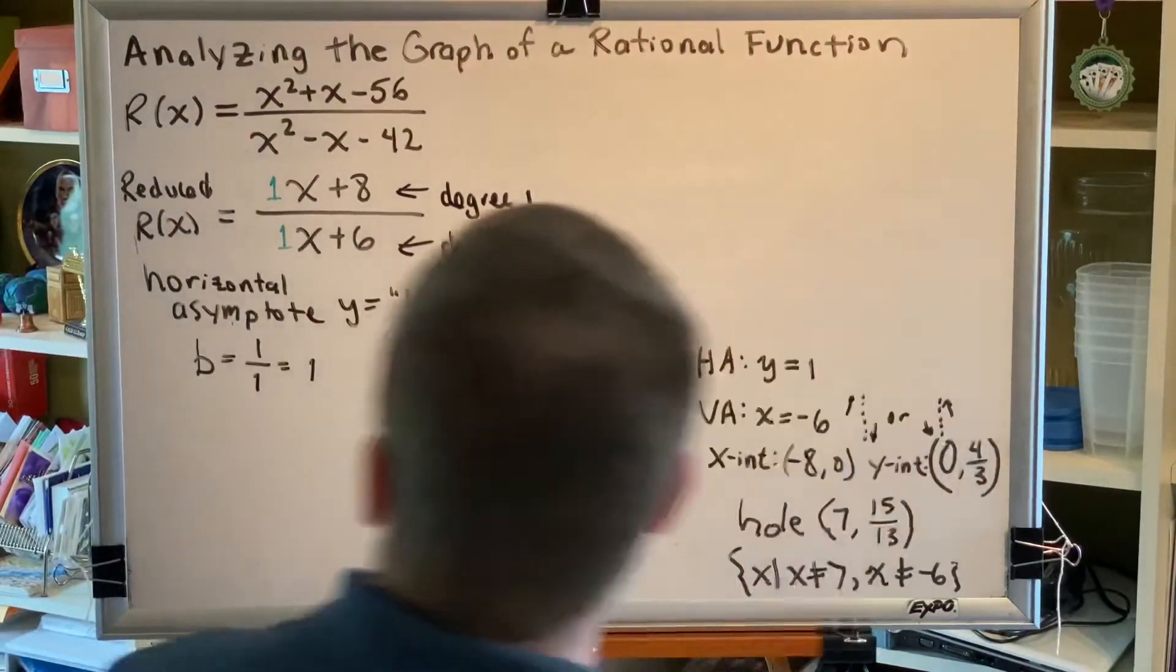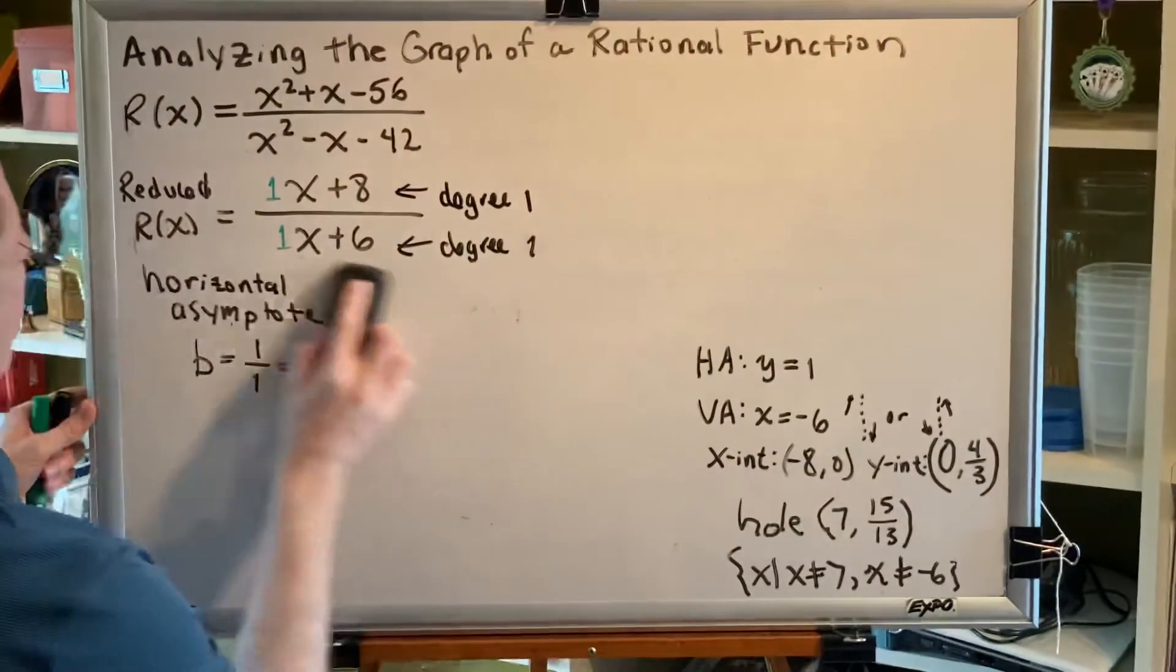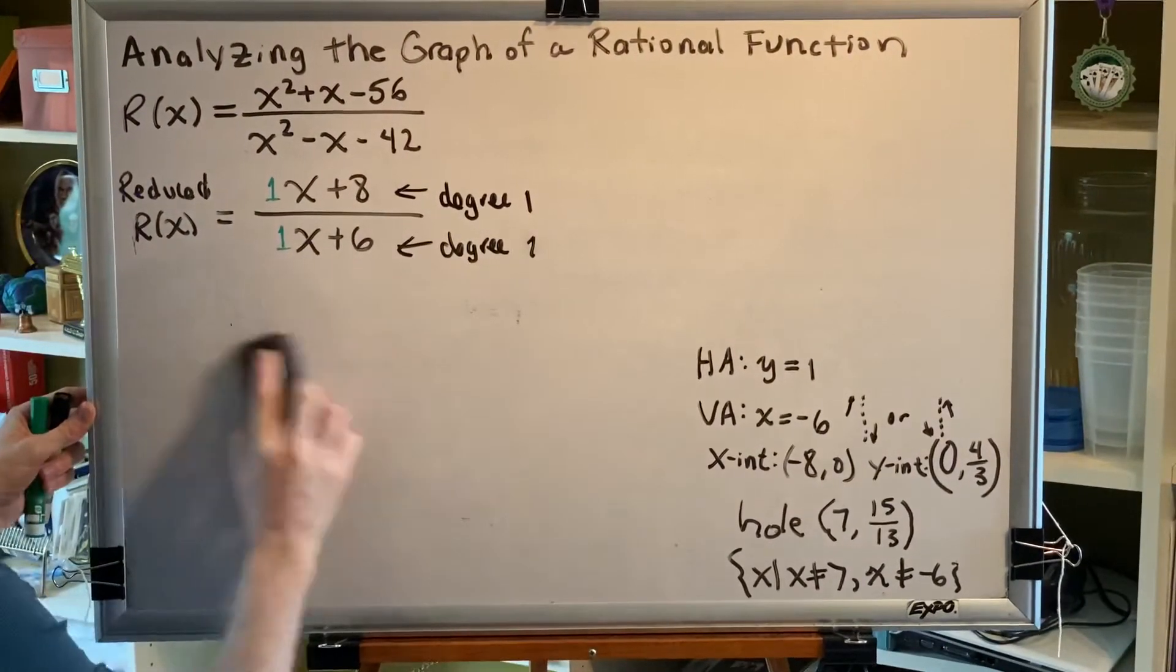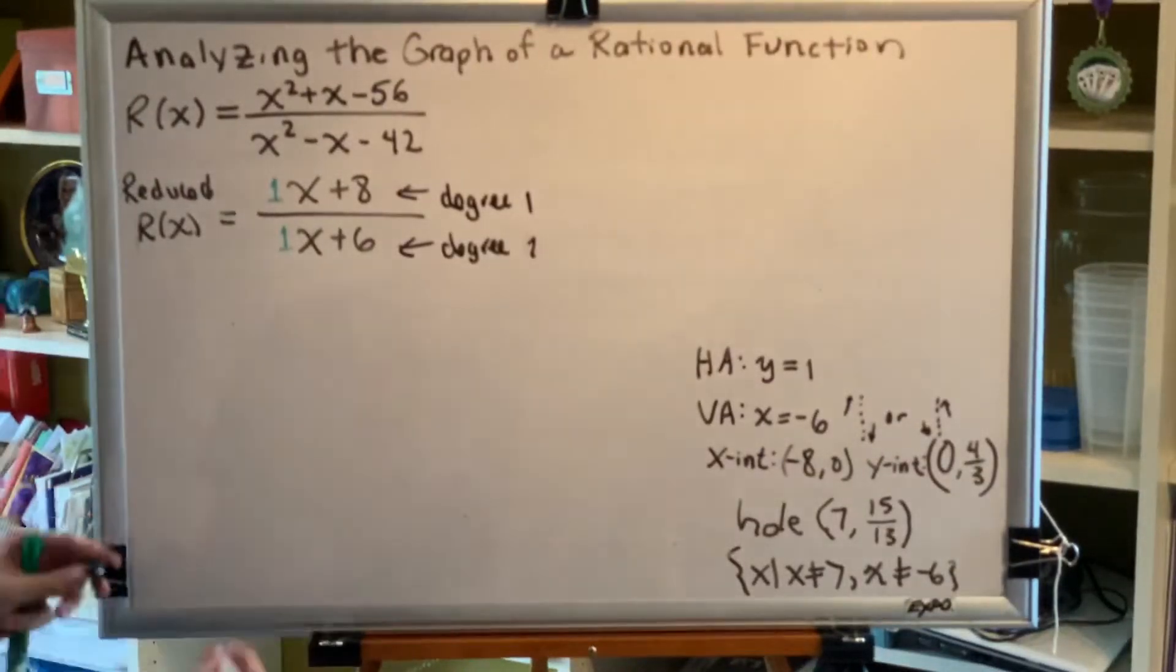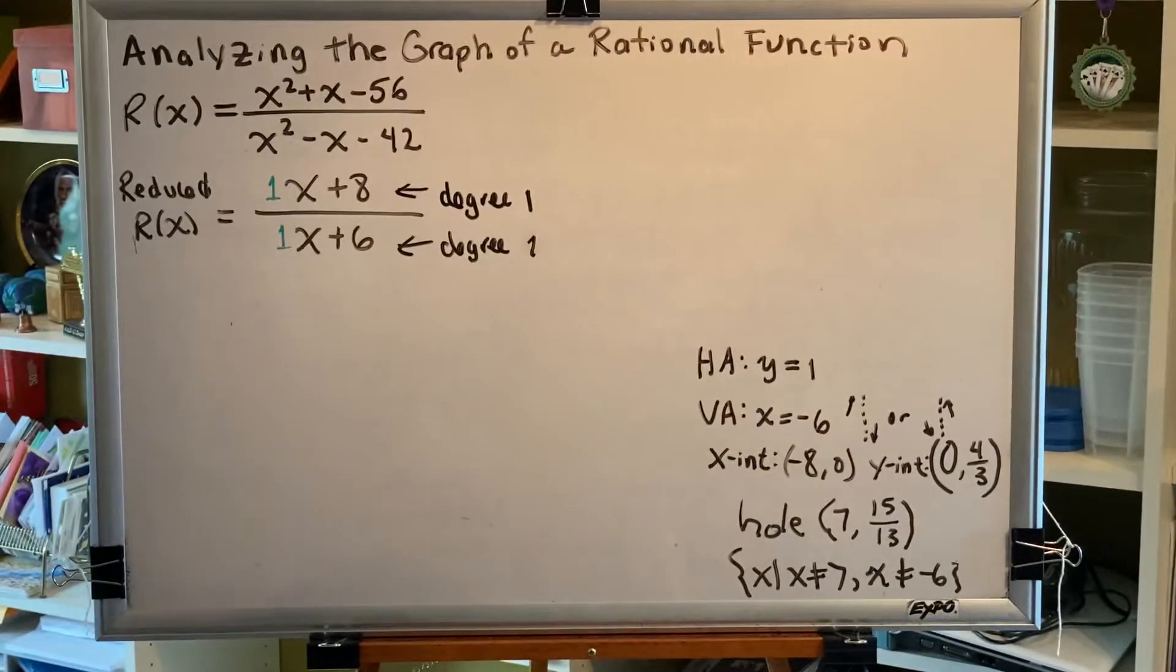The next thing we're going to check for is, does this horizontal asymptote intersect our graph? So let's find out. We're going to use reduced r of x in order to make that determination.